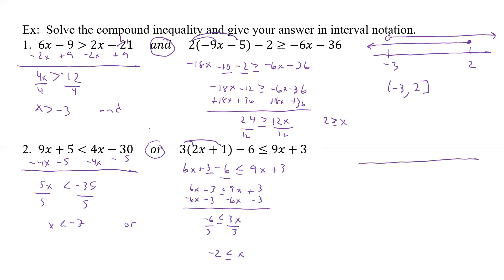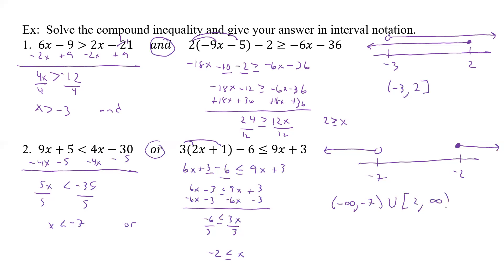All right, so graphing. Remember, this is 'or'. So here we have negative 7, and here we have negative 2. x is less than negative 7, so it's an open circle going that way. And here x is greater than or equal to negative 2. So we have everything that way. Now with 'or', we want to include everything — this one, or this one, or both. So we're going to go from negative infinity to negative 7 with a parenthesis, union, then from bracket negative 2 to positive infinity. And that would be our solution.